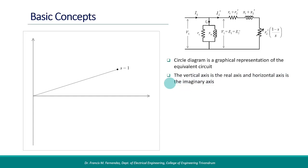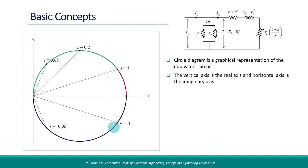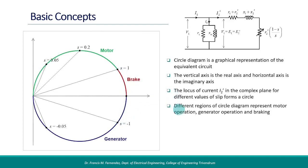With reference to the equivalent circuit, we mark the current I2' in the complex plane for different values of slip, taking both positive and negative values of slip s. When we connect all these points, it forms a circle. Different regions of the circle diagram represent motor operation, generator operation, and braking.